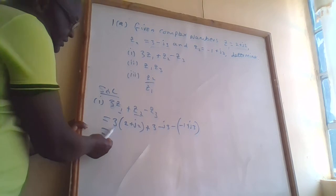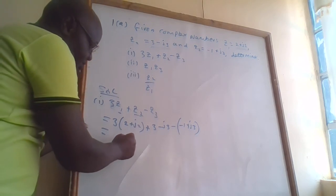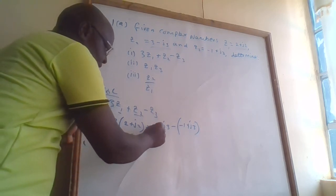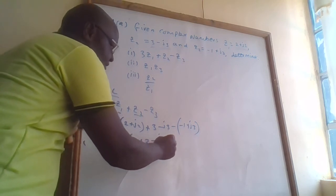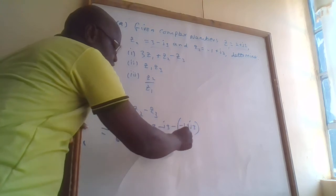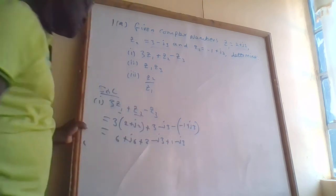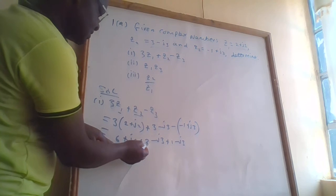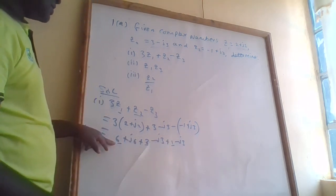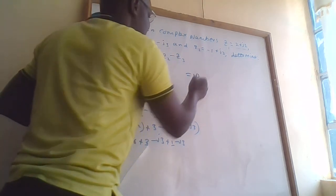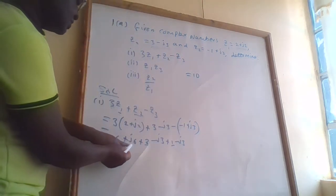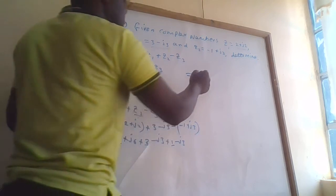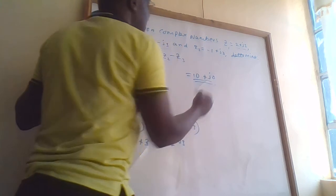Opening up the brackets: 3 times 2 gives 6, plus 3 times j2 gives j6, plus 3 minus j3, then minus negative 1 is plus 1, then minus j3. Collecting real parts: 6 plus 3 plus 1 equals 10. For imaginary parts: j6 minus j3 minus j3 equals j0.